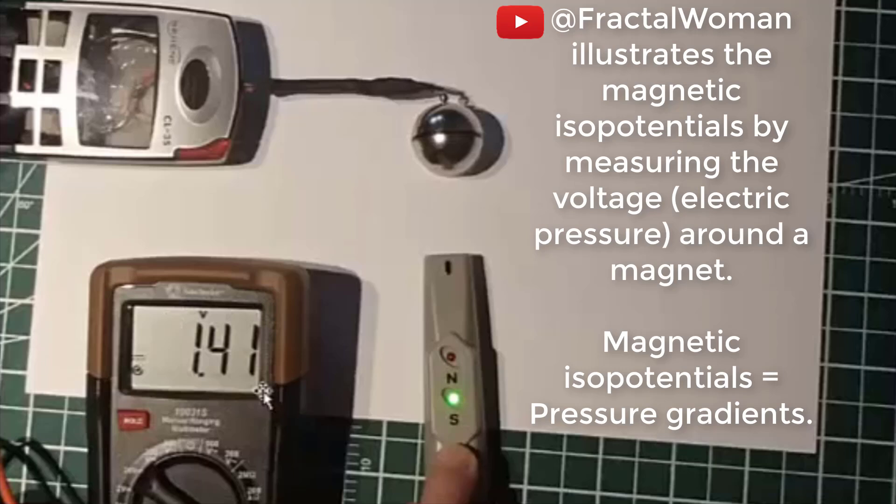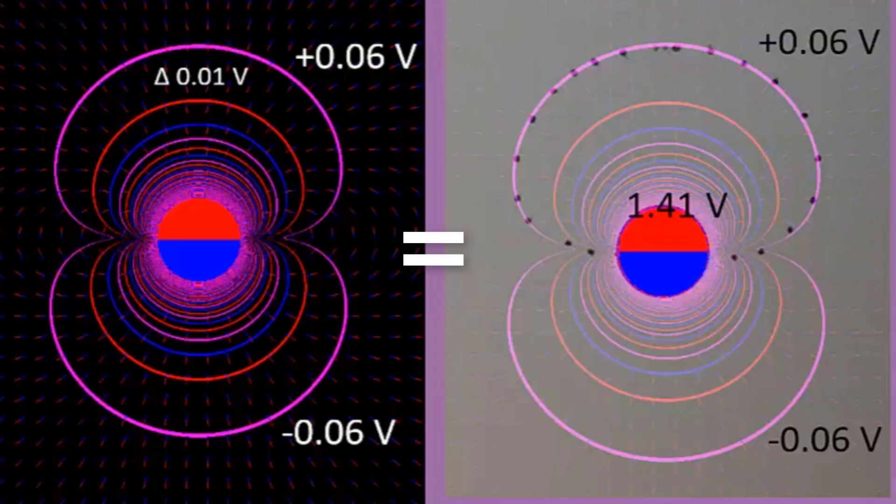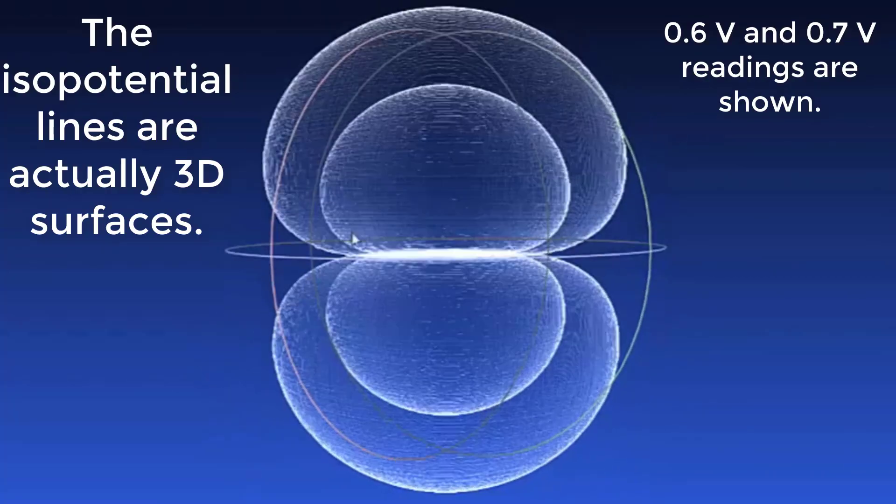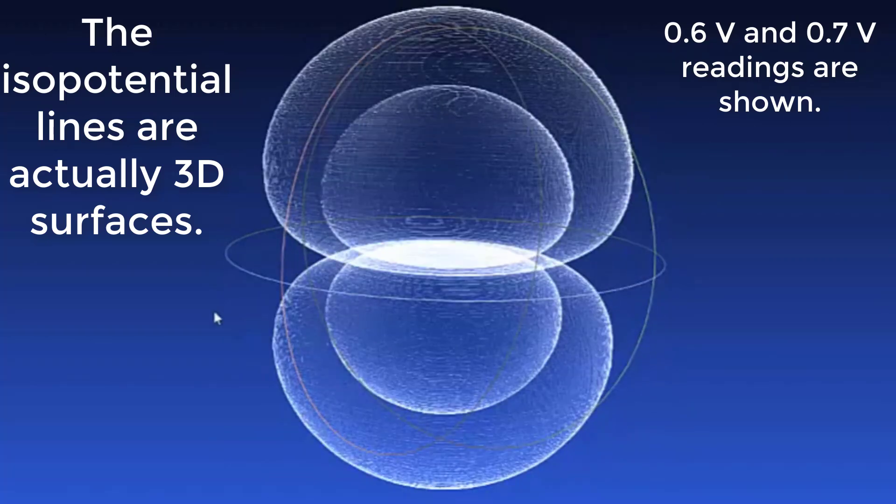Magnetic isopotentials can be thought of as pressure gradients. Each dot represents a .06 volt reading at a distance from the magnet. Fractal Woman's voltage readings match the isopotentials plotted from Michael Snyder's Pick2Mag software. The isopotential lines are actually 3D surfaces. The .6 and .7 volt readings are shown.